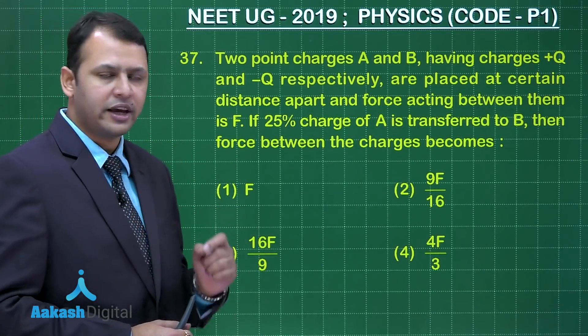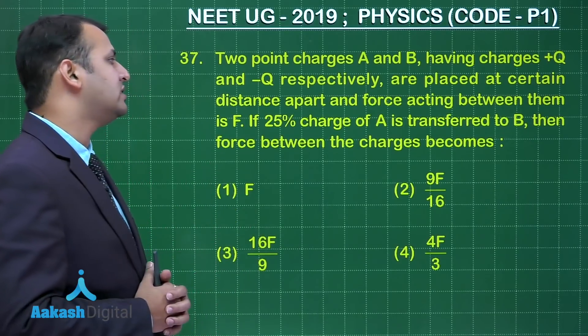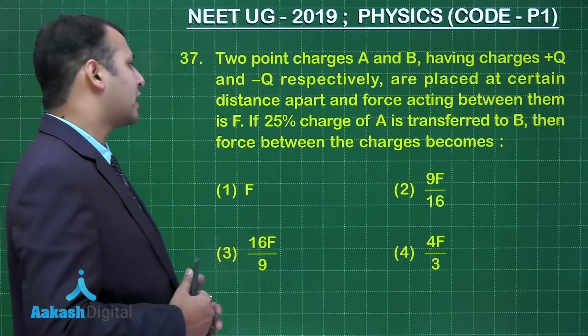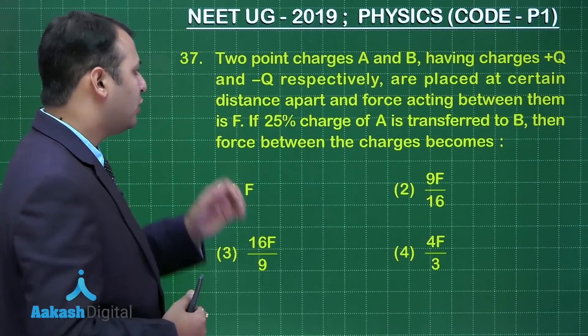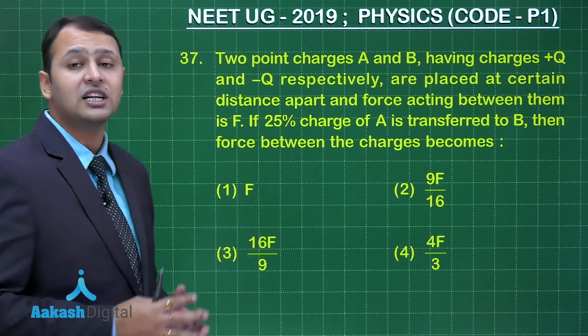two point charges A and B having charges plus Q and minus Q respectively are placed at certain distance apart and the force acting between them is F. If 25% charge of A is transferred to B then force between the charges becomes.